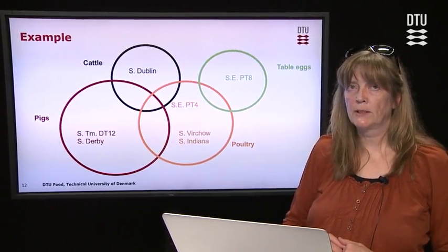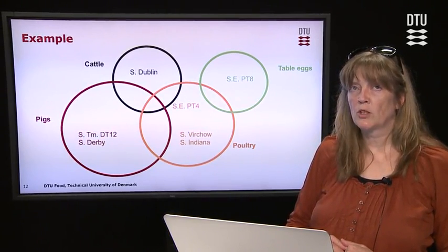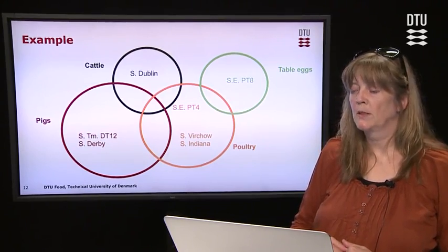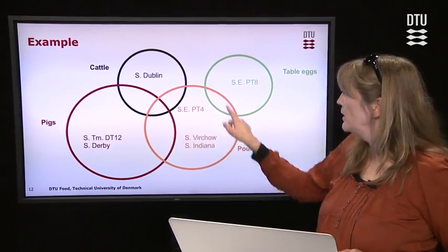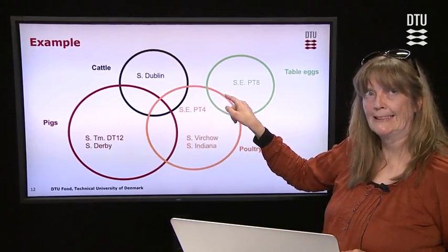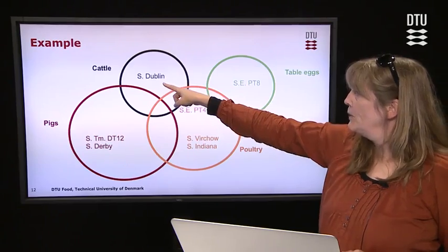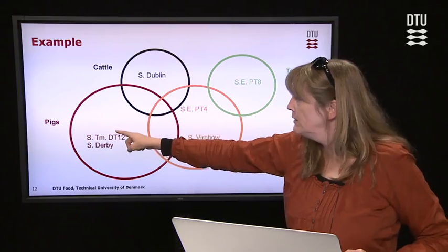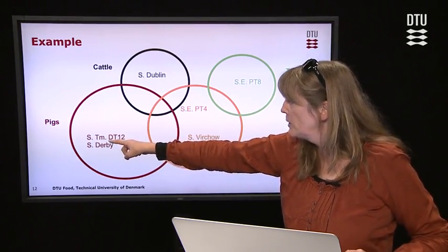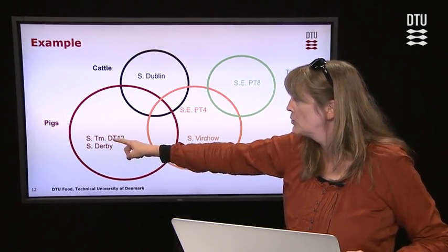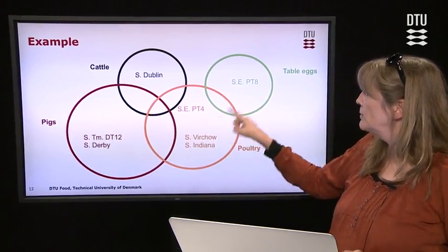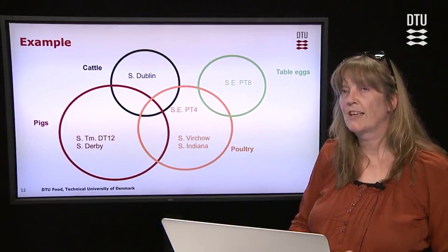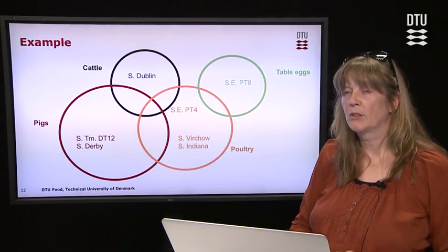Here is an example from a Danish situation where we have a reservoir of a particular pathogen — in this case salmonella — and we have different salmonella subtypes. We have pigs, cattle, poultry, and table eggs. In cattle, we have salmonella Dublin, which is only found in cattle in this particular year. For pigs we found salmonella typhimurium DT12 and salmonella Darby, which were also not found in any other sources. These types found in only one single reservoir we call unique types, and these serve as indicators of the reservoir's impact on human health.